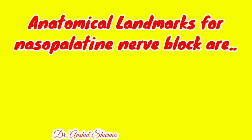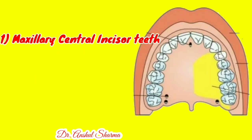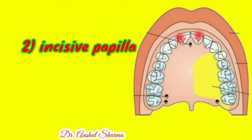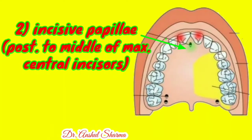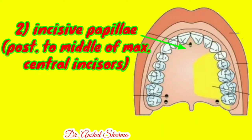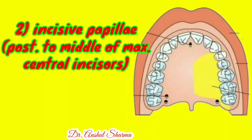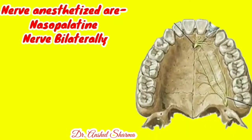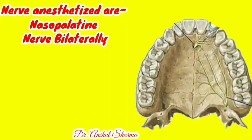The anatomical landmarks for the nasopalatine nerve block are the maxillary central incisor teeth, the incisive papilla in the middle of the hard palate, and the location posterior to the middle of the maxillary central incisors. The nasopalatine nerve is anesthetized bilaterally.